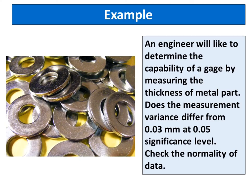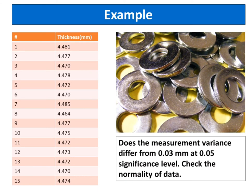For example, an engineer will like to determine the capability of a gauge by measuring the thickness of metal parts. Does the measurement variance differ from 0.03 millimeters at 0.05 significance level? Check the normality of data.